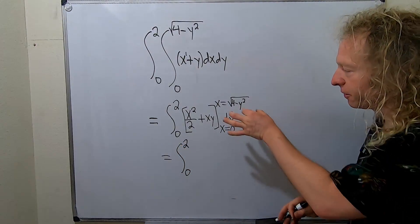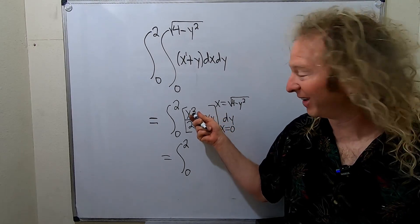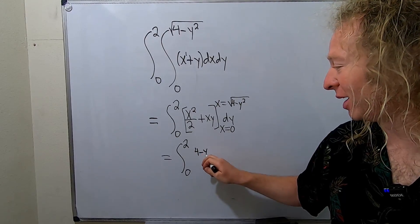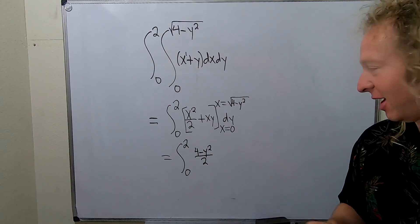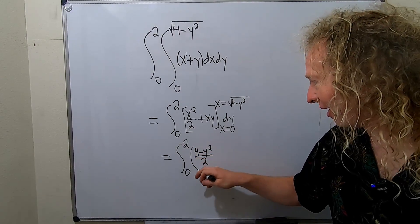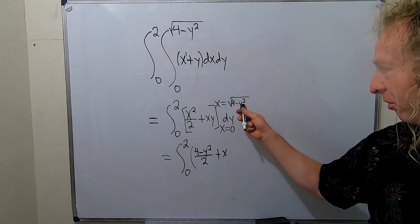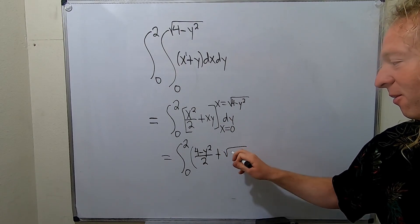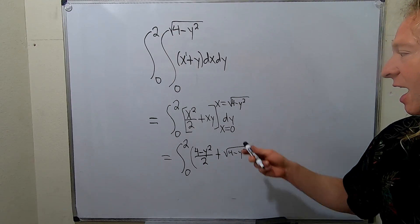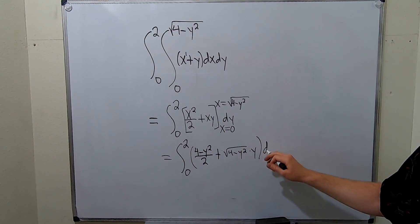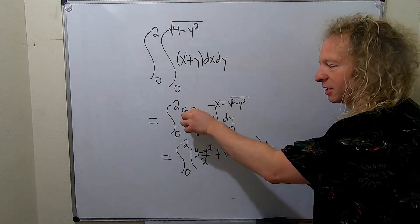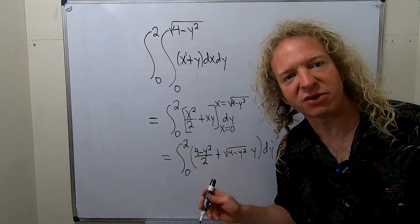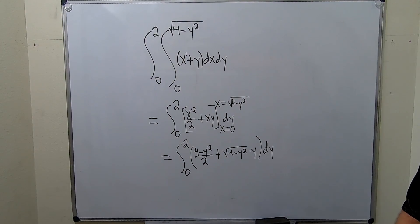It's very notationally intensive — not hard, but you have to be really careful; that's how Calculus 3 is. From 0 to 2: first you plug in the upper limit. The nice thing is this is squared, so the square root is going to go away. This gives us 4 minus y squared over 2, plus the square root term times Y, and when you plug in zeros that goes away.